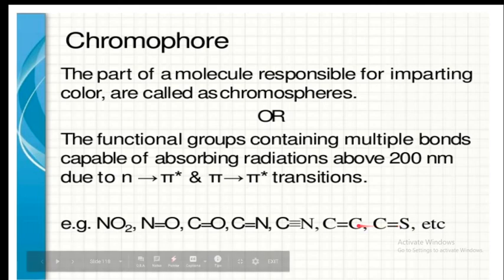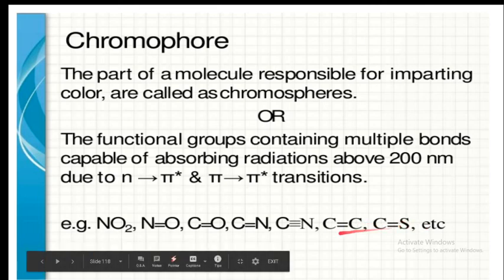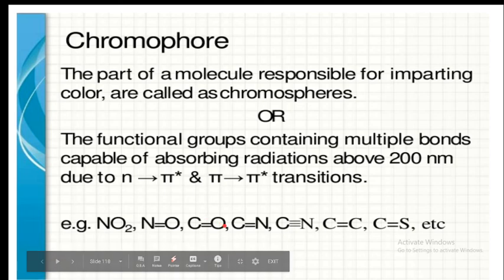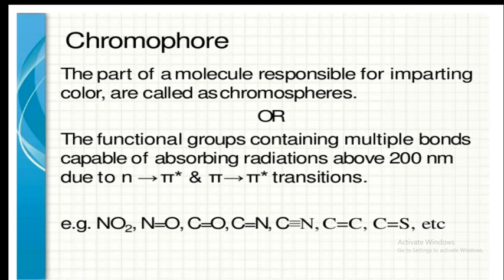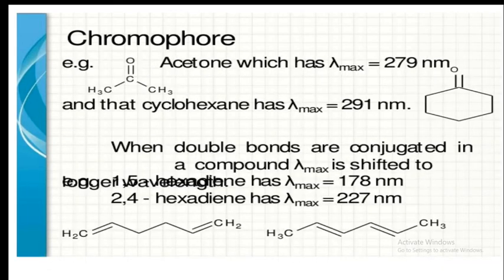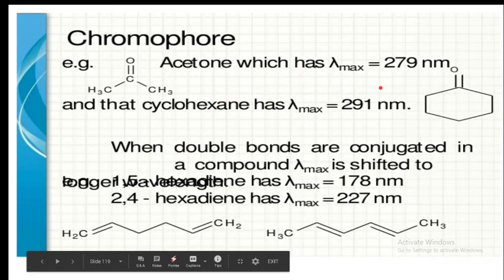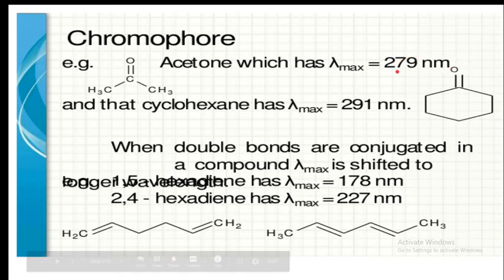Groups containing heteroatoms such as sulfur, nitrogen, and oxygen, and unsaturated groups such as double and triple bonds, are responsible for absorption of UV or visible radiation. These groups are called chromophores. For example, acetone has a lambda maximum of 279 nanometers and cyclohexadiene has a lambda max of 291 nanometers.